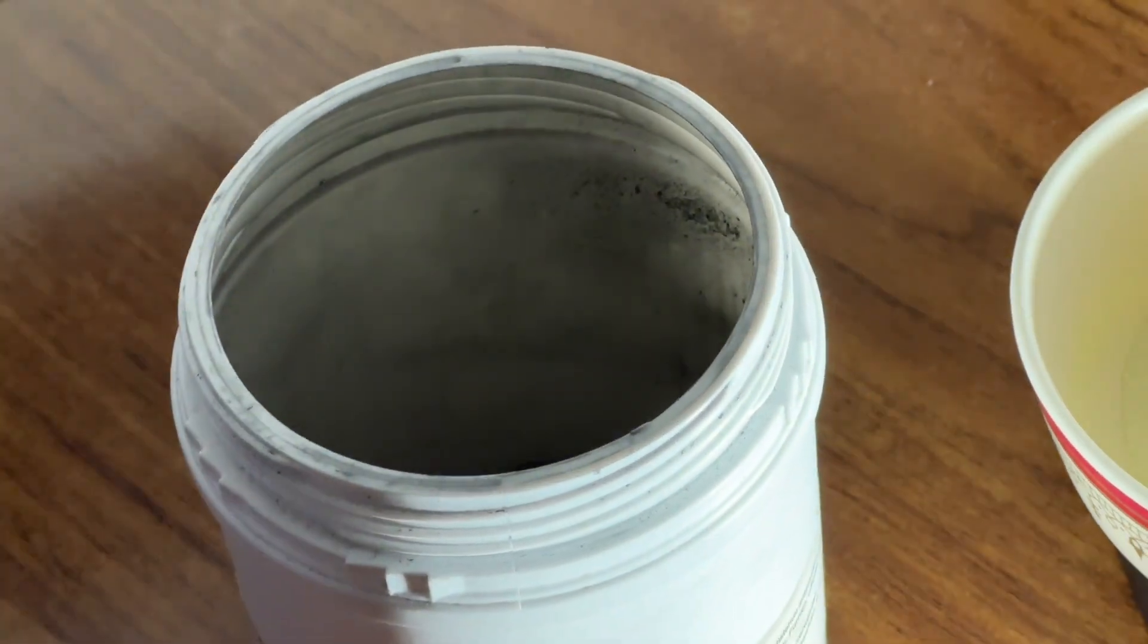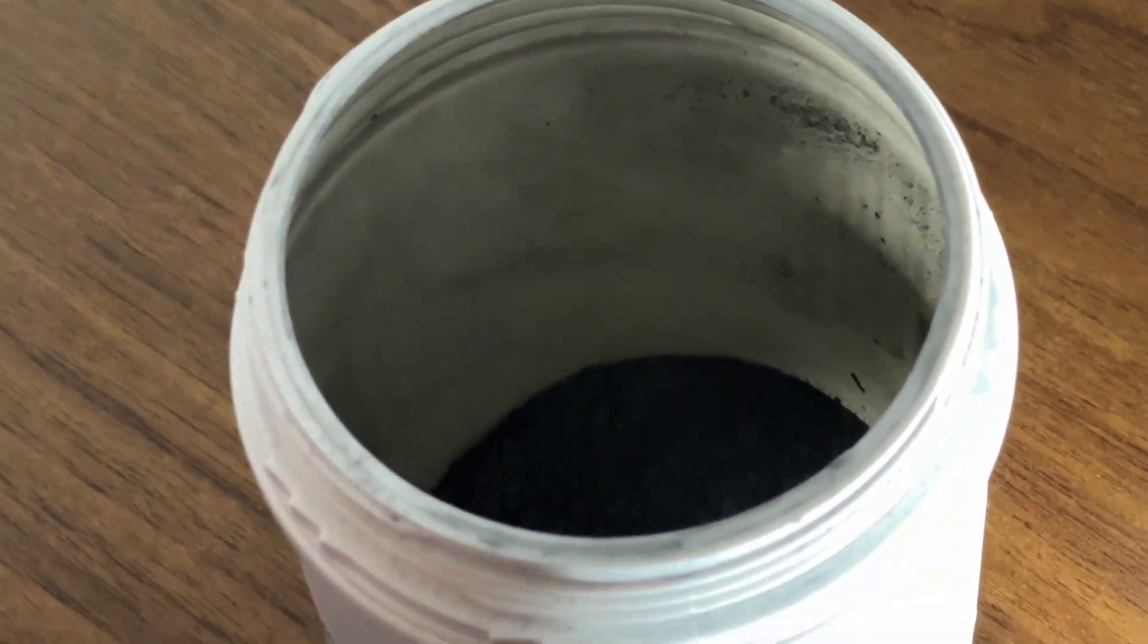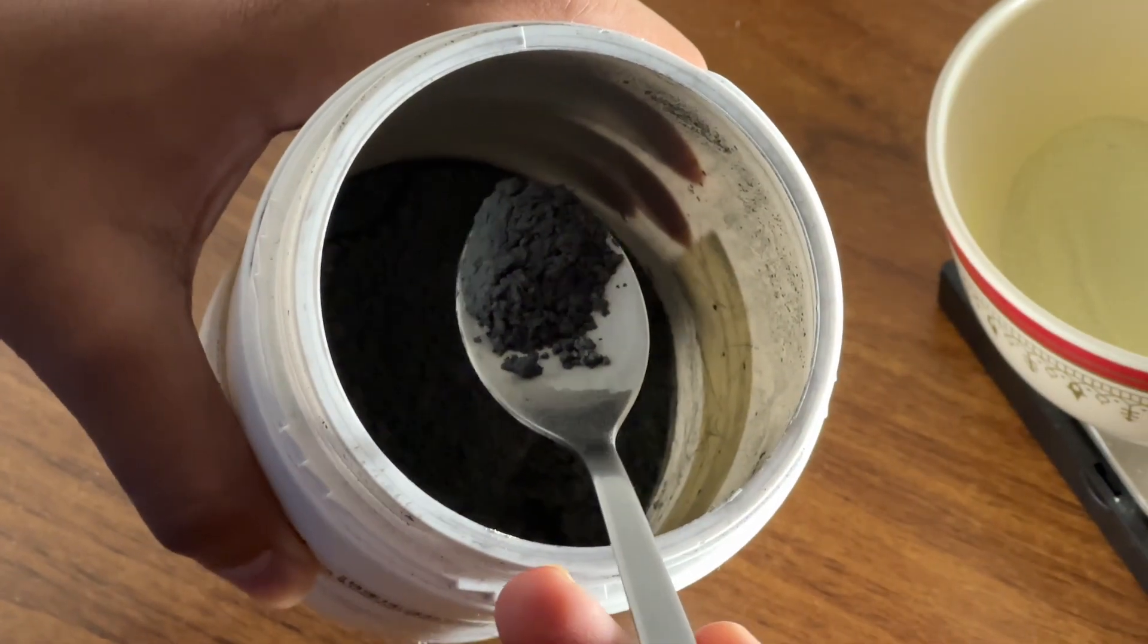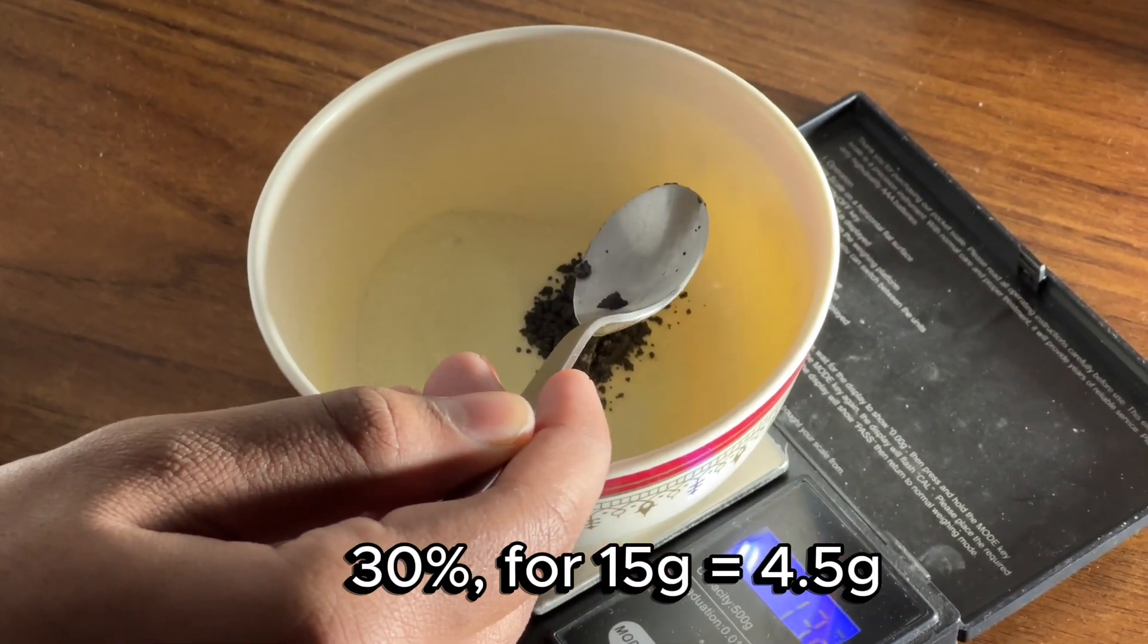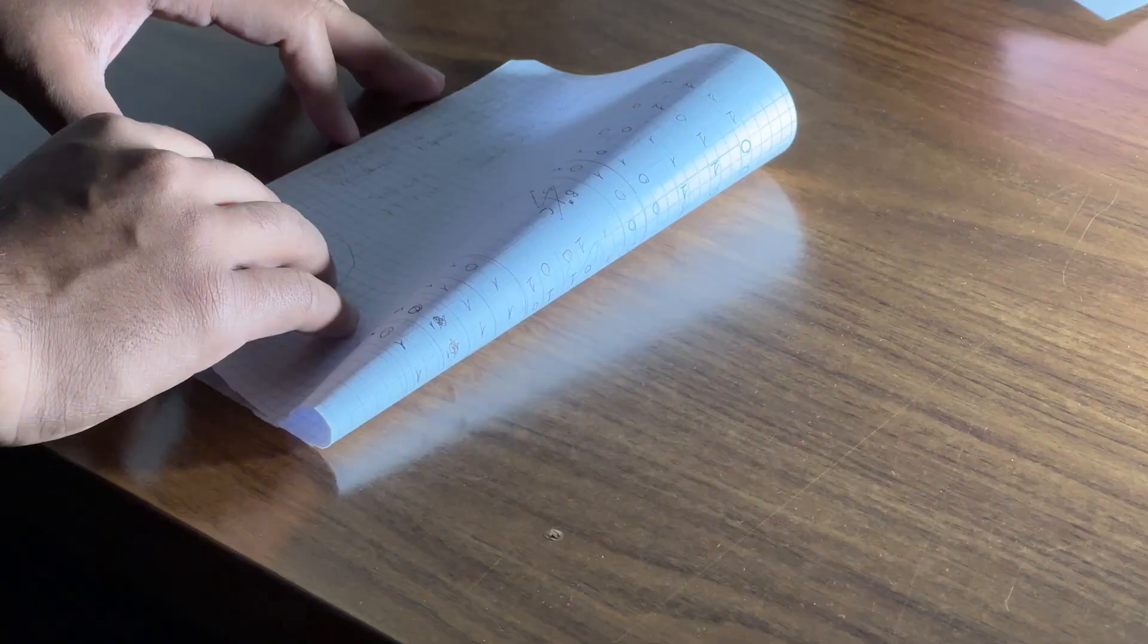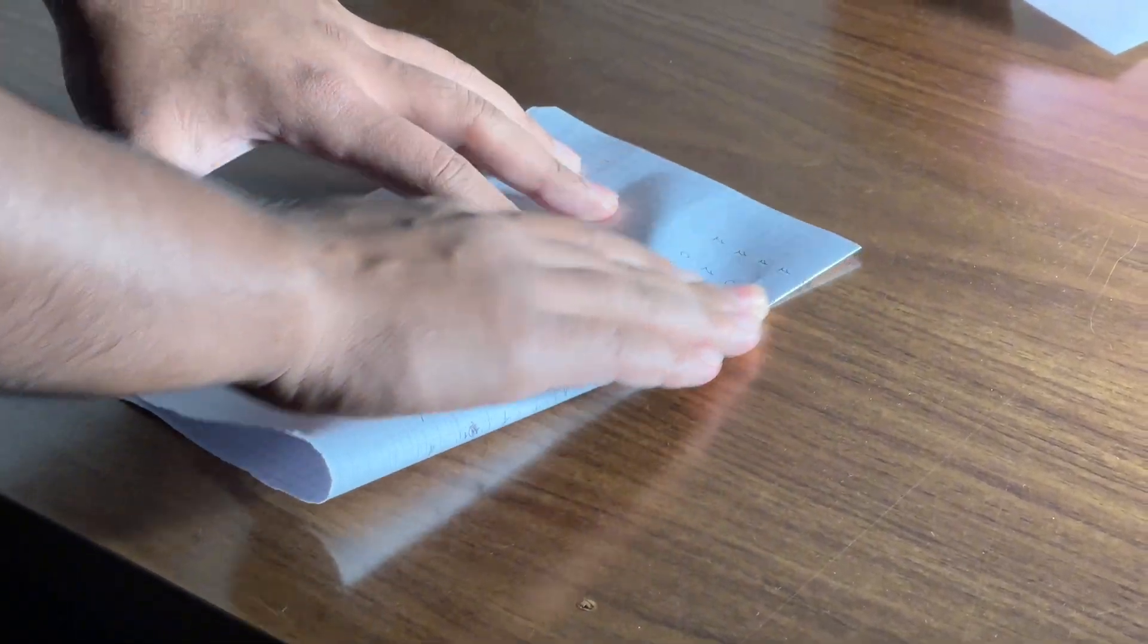The last ingredient that I'm gonna add is this fine aluminum powder. This one is very reactive because its particle size is very small, about 5 microns. At this point, adding this third ingredient makes the mixture flammable.